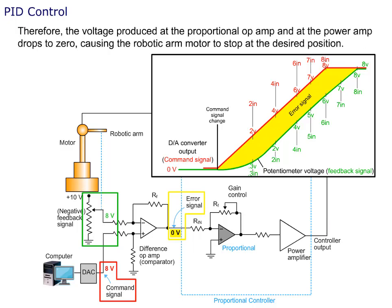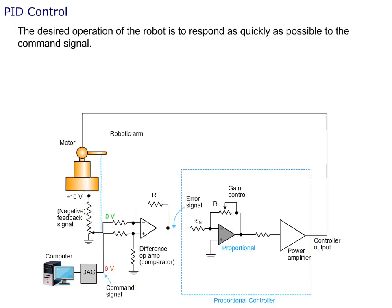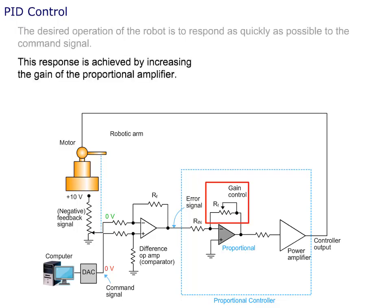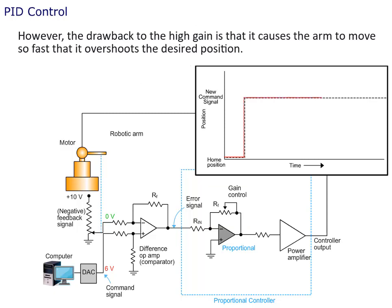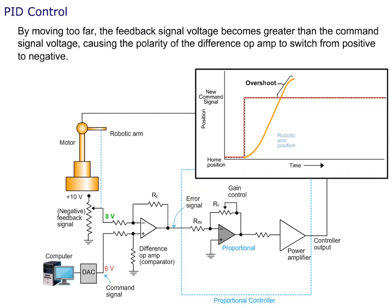Therefore, the voltage produced at the proportional op amp and at the power amp drops to zero, causing the robotic arm motor to stop at the desired position. The desired operation of the robot is to respond as quickly as possible to the command signal. This response is achieved by increasing the gain of the proportional amplifier. However, the drawback to the high gain is that it causes the arm to move so fast that it overshoots the desired position.